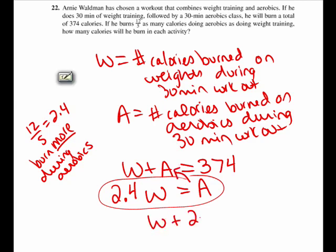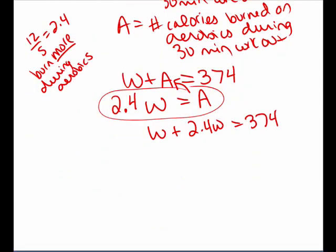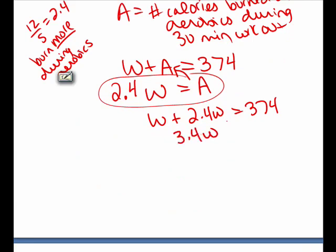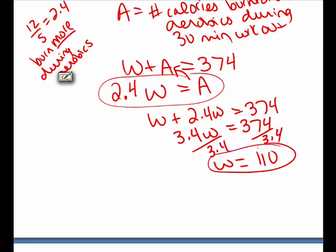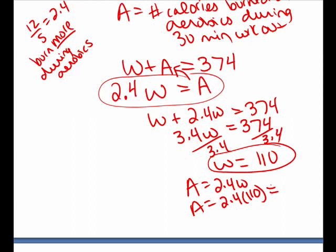Plugging 2.4W in for A, I have W plus 2.4W equals 374, which gives 3.4W equals 374. Dividing both sides by 3.4, we get W equals 110. Then since A equals 2.4W, we replace W with 110 and get A equals 264.